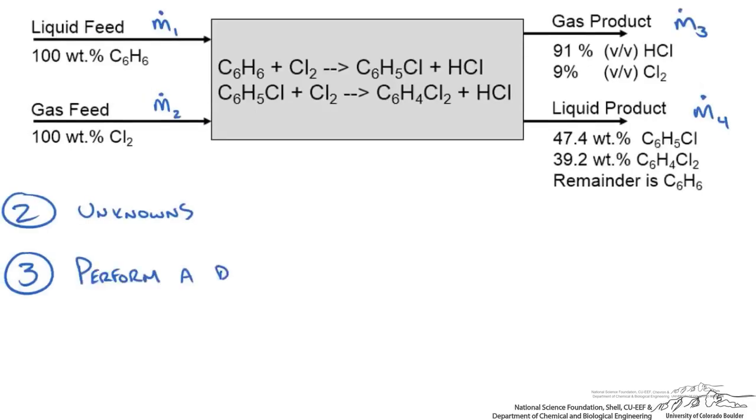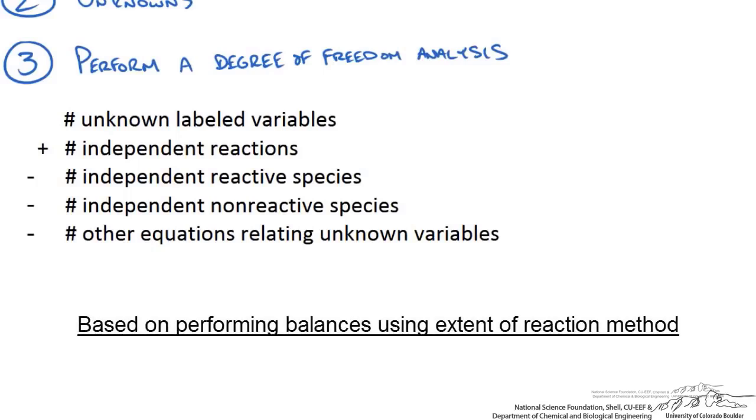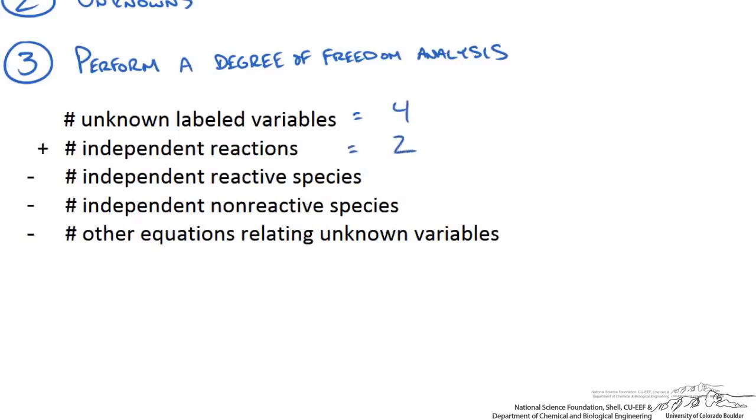The next step is to perform a degree of freedom analysis to examine this problem and determine if we could even solve it, or what information we could plug in to solve it. We start with the unknown labeled variables, which we have as the four flow rates. We add any independent reactions—we have two independent reactions—minus any independent reactive species. We have a total of five species, no non-reactive species, and we don't have any other equations that relate these unknown variables.